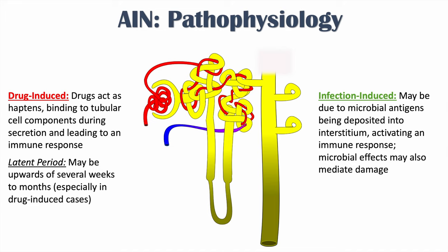In infection-induced AIN, microbial antigens — proteins from bacteria or viruses — get deposited into the interstitium, the area surrounding the nephron. This leads to an immune response and immune attack on those areas, causing damage. There may also be direct microbial effects that mediate damage to parts of the nephron.